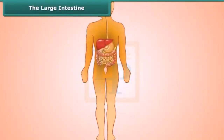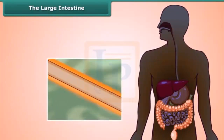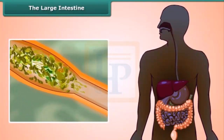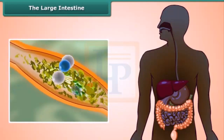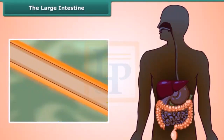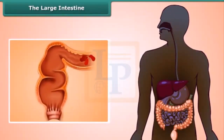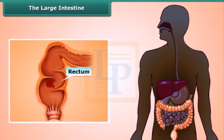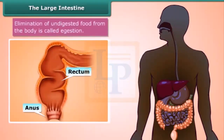When chyme gets into the large intestine, it absorbs most of the water and some salts from the undigested food. This step is important because recovering water keeps us safe from getting dehydrated. Once most of the water is gone, solid waste moves to the last part of the large intestine called the rectum, and the fecal matter is removed through the anus. This completes the human digestion process.